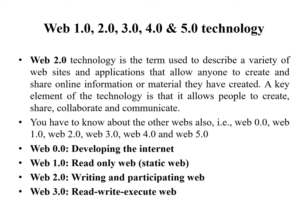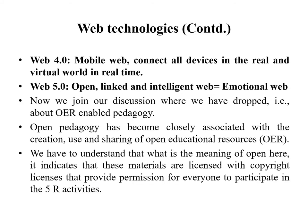Web 2 technology is the term used to describe a variety of websites and applications that allow anyone to create and share online information or material they have created. Web 1 means the read-only web. Web 2 means the writing and participating web. Web 3 means the read, write, and execute web. Web 4 means the mobile web — connecting all devices in the real and virtual world in real time. Web 5 means the open, linked, and intelligent web — that is, the emotional web.